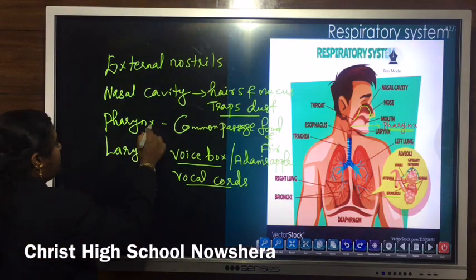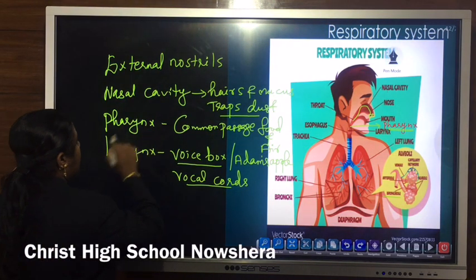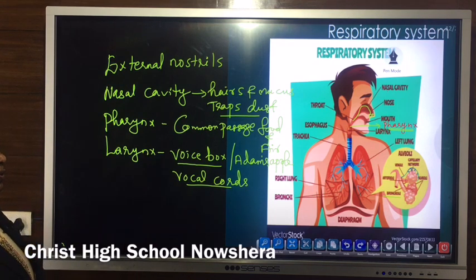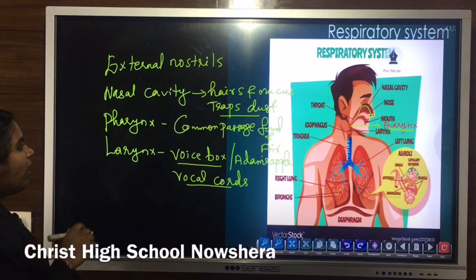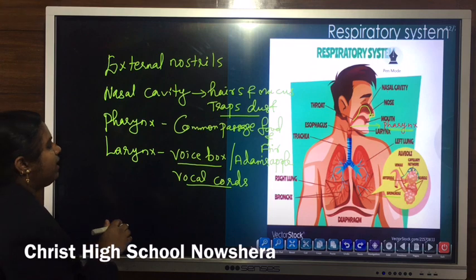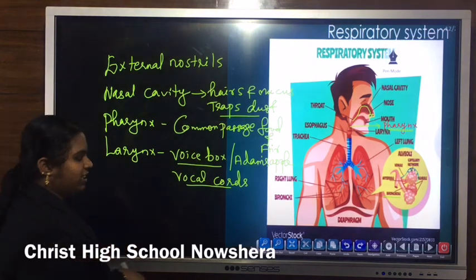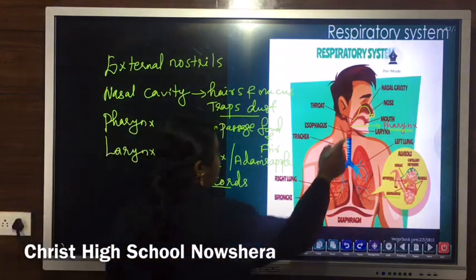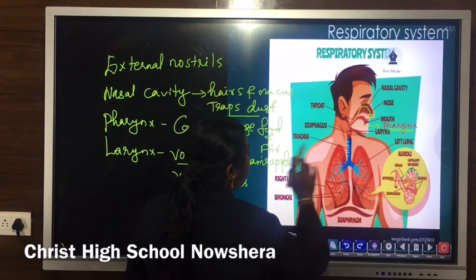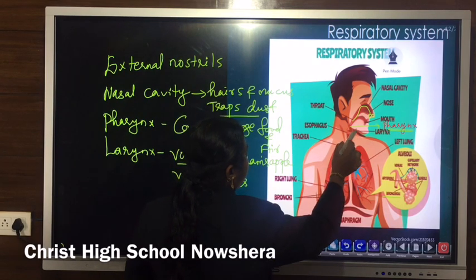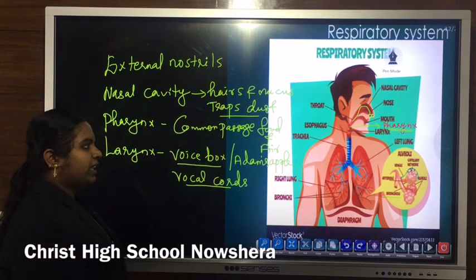The pharynx is the common passage for food as well as air, and can be seen as a junction between the nasal cavity and the larynx.